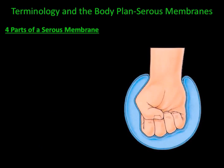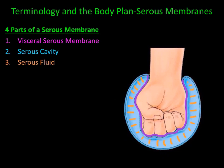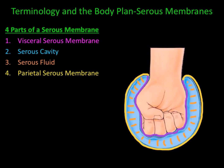Next, we're going to take a look at the parts of serous membrane. Serous membrane is one of many types of membranes found in the human body, and it is the membrane that covers organs. There are four parts: the visceral serous membrane, the serous cavity, serous fluid, and the parietal serous membrane. The visceral serous membrane touches the organ itself. The parietal serous membrane is the outermost membrane. In between them is the serous cavity, and within the serous cavity is serous fluid, which acts as a shock absorber and helps reduce friction.